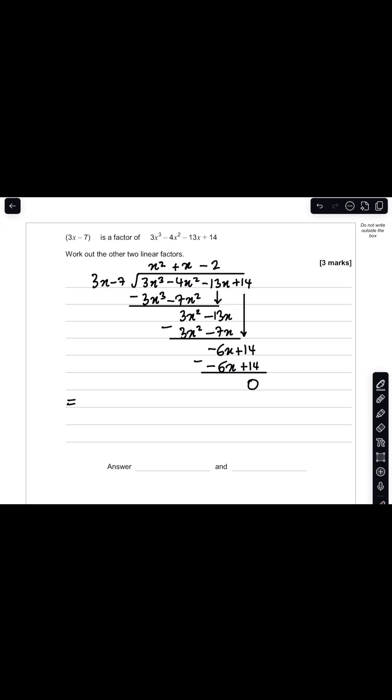So we can actually rewrite our cubic expression as 3x minus 7 multiplied by this quadratic expression which is x squared plus x minus 2. And now what we need to do here is factorize this quadratic expression.